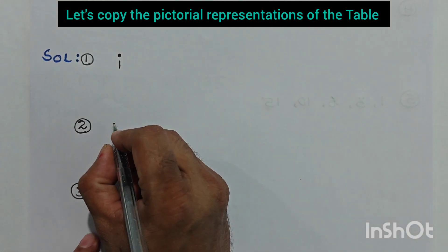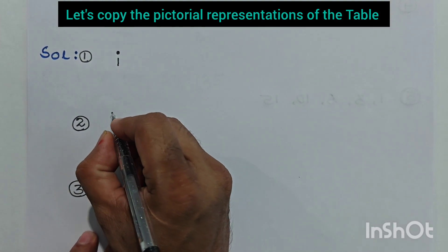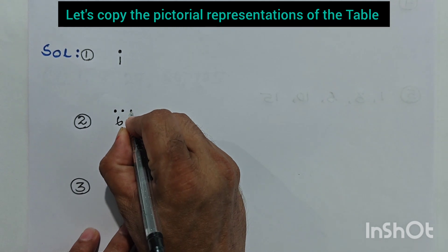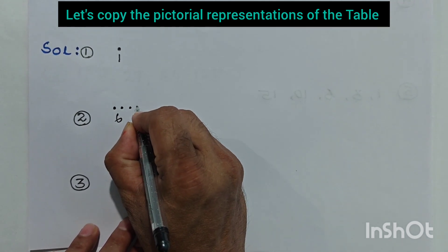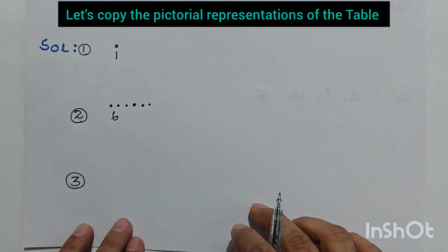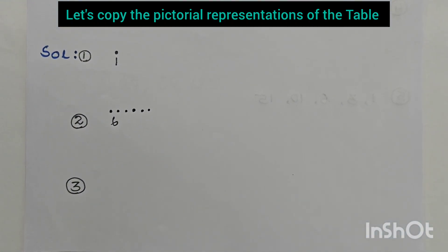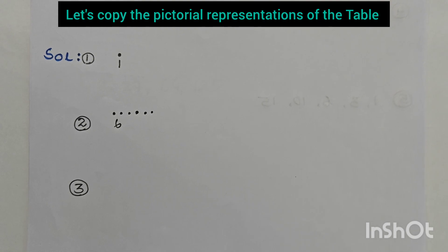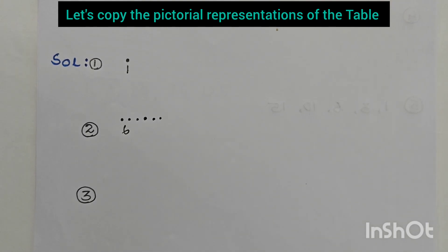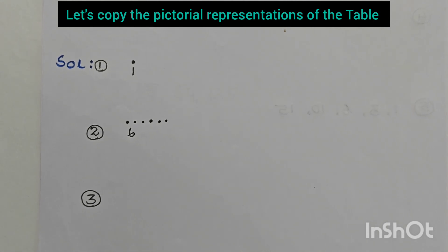For sequence two, we have to put six dots: one, two, three, four, five, six. For sequence three, those are the odd numbers up to nine, so the next number will be eleven.